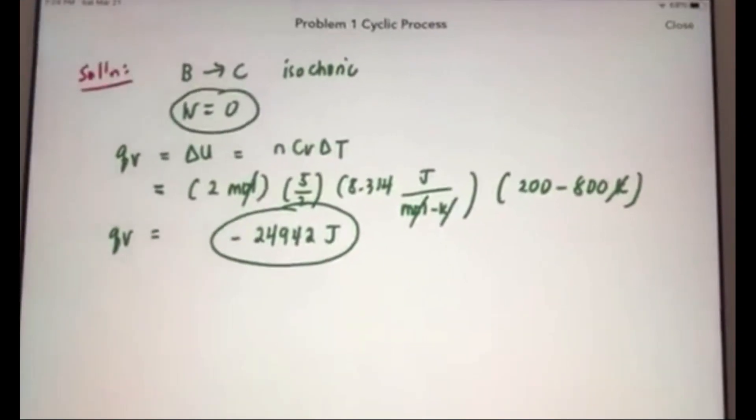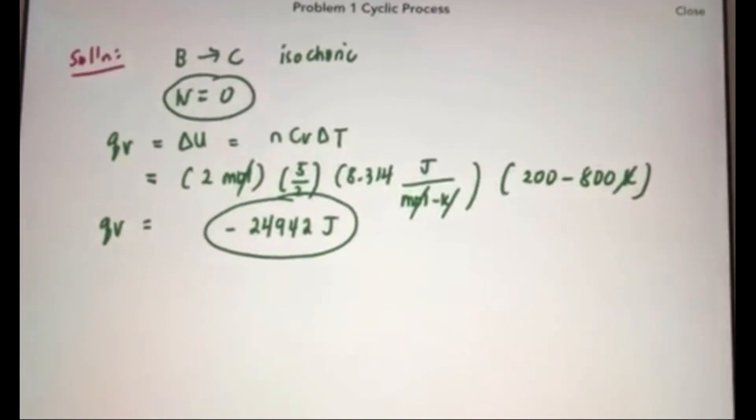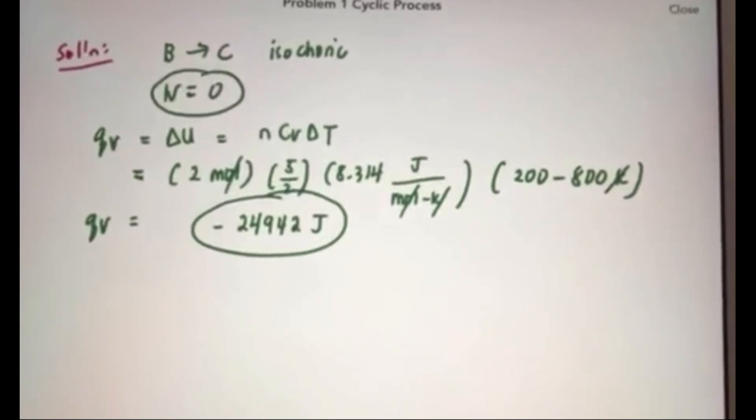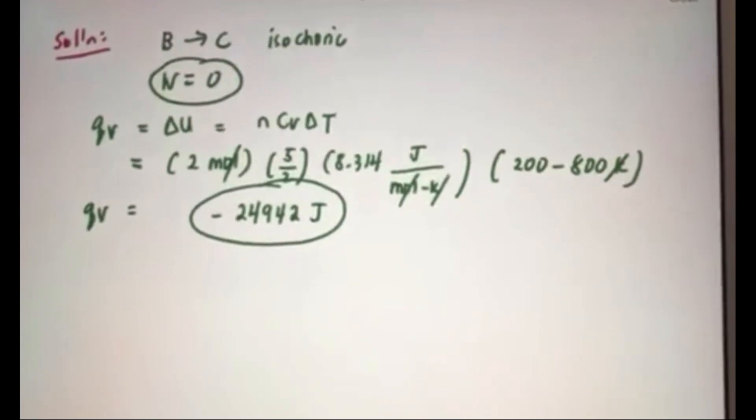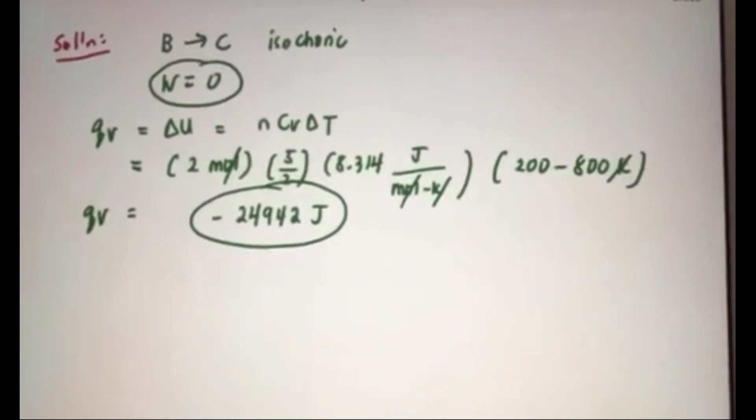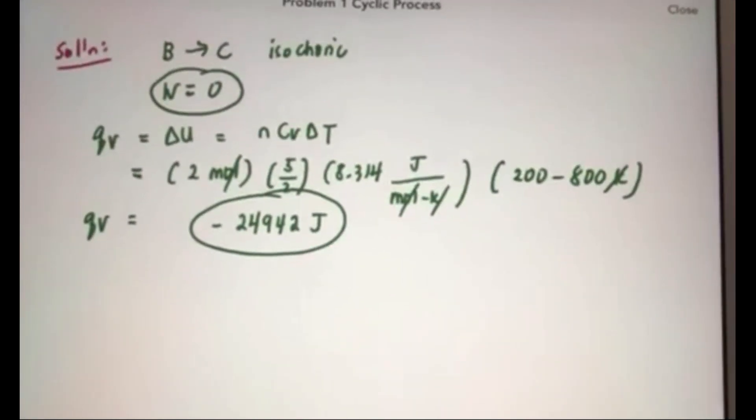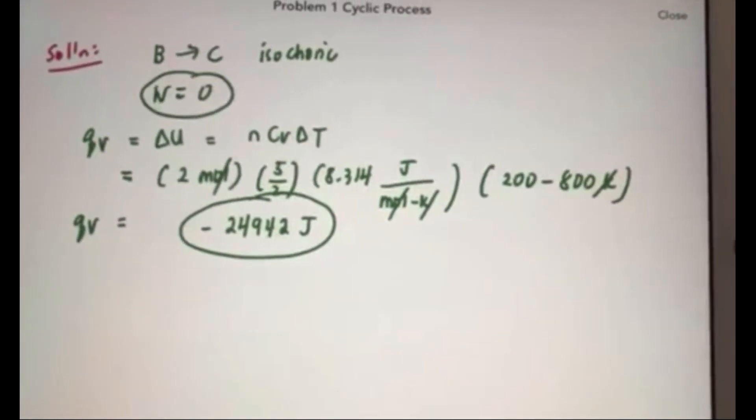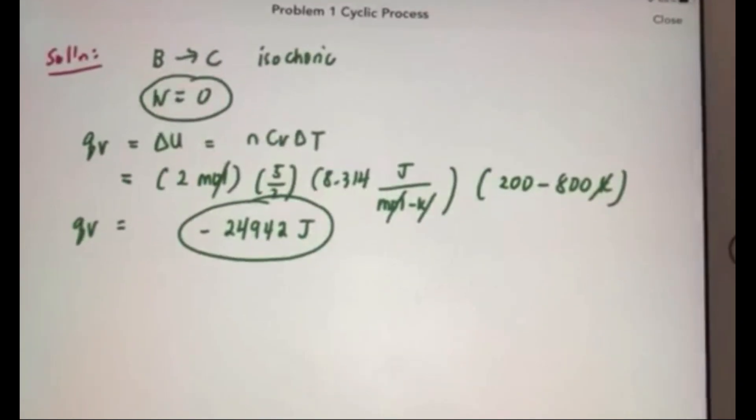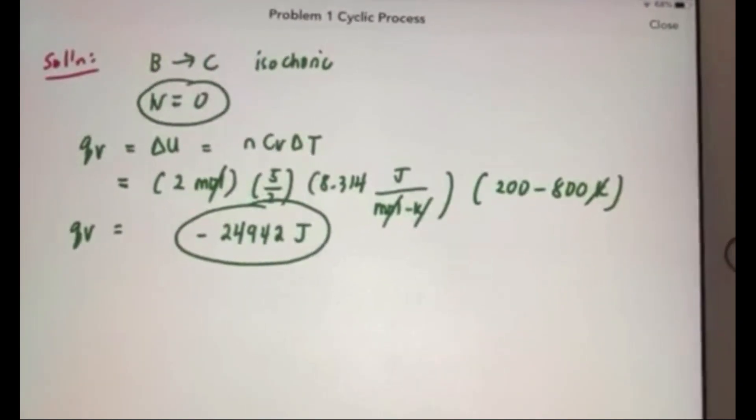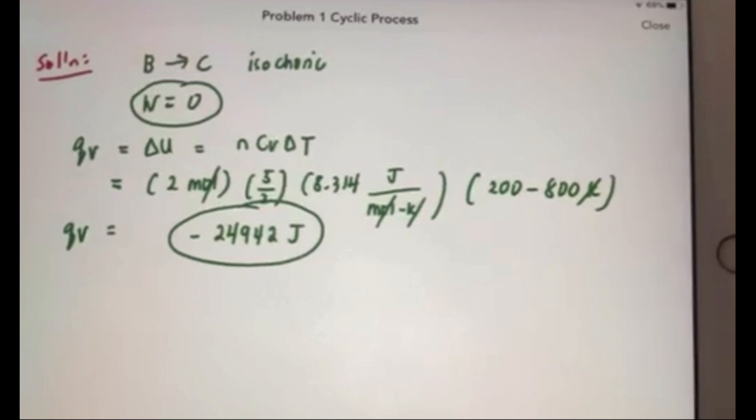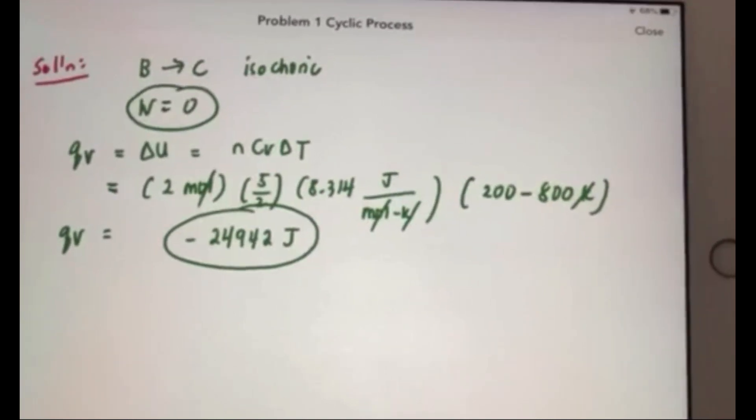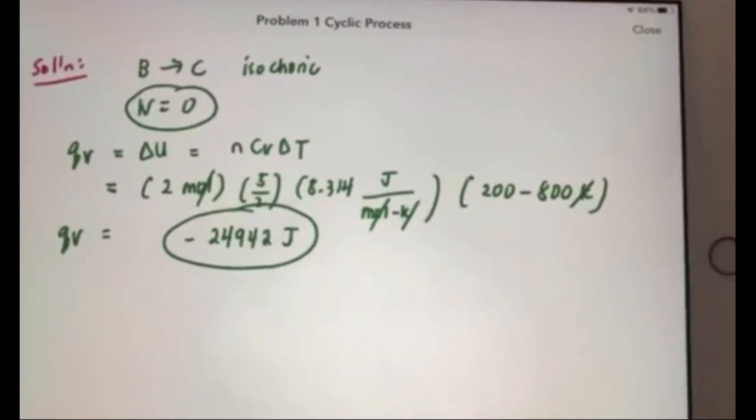For steps b to c, this is an isochoric process. So we know that for isochoric process, work is equal to delta u, q at constant volume, therefore is equal to internal energy and Cv delta t. So qv equal to delta u equal to negative 24,942 joules.